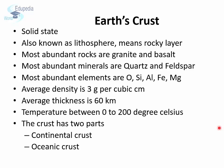The most abundant elements of the earth's crust are oxygen, silicon, aluminum, iron, and magnesium. A surprising fact is that oxygen is the most abundant element in the earth's crust. The average density of the earth's crust is 3 grams per cubic centimeter, and the average thickness of the earth's crust is around 60 kilometers. Temperatures rise as we go deeper in the earth's crust and it reaches close to 200 degrees Celsius.